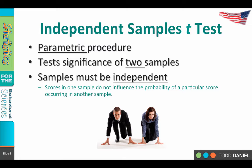Independence means that the scores in one sample do not influence the probability of scores occurring in the other sample. For example, if we're comparing men to women, think about which one you are. If you're taking a test and you score in a certain way, does that influence anyone else in the other group? No — your scores are independent of the other group's scores.